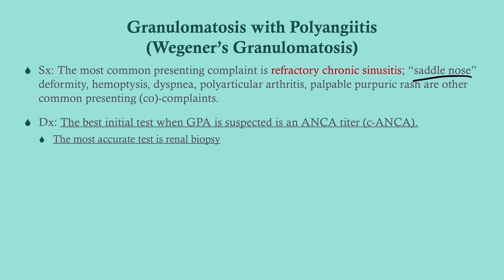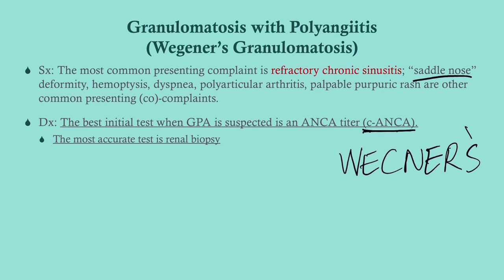Patients can also get a saddle nose deformity — a collapse of the nasal bridge — which is fairly typical for Wegener's. The best initial test when you suspect any arteritis is to order ANAs and ANCAs. For Wegener's specifically, the best initial test is a c-ANCA — you can remember it as 'c for Wegener's.' The most accurate test is a renal biopsy, because of its predilection for the kidneys.